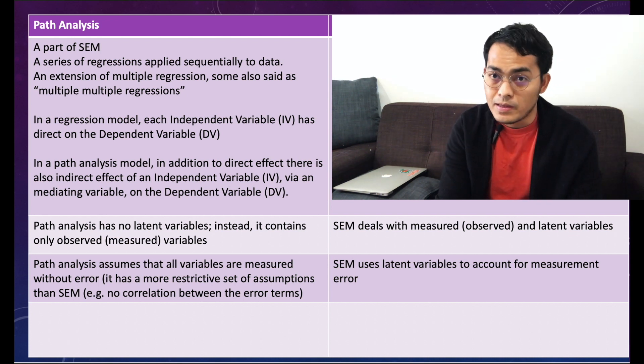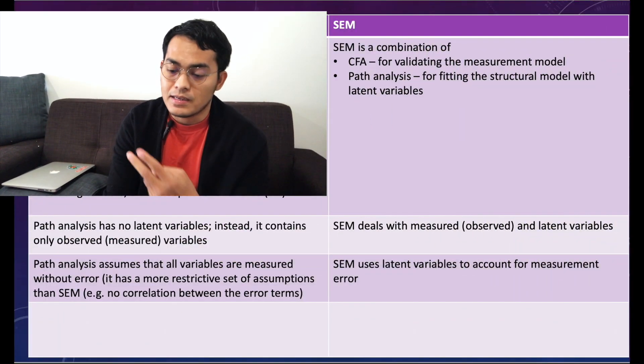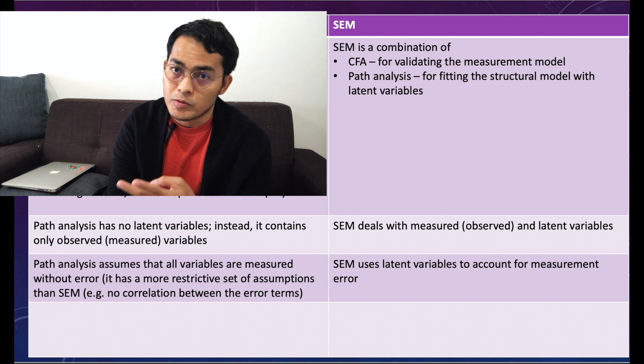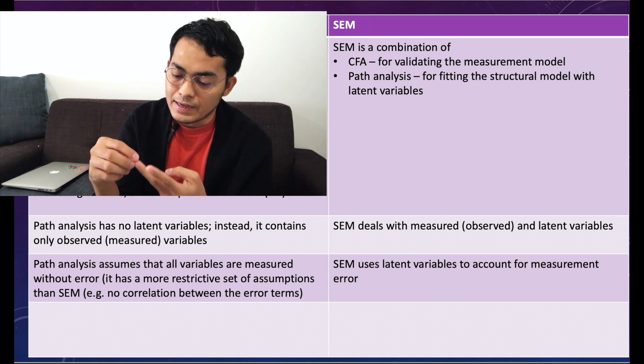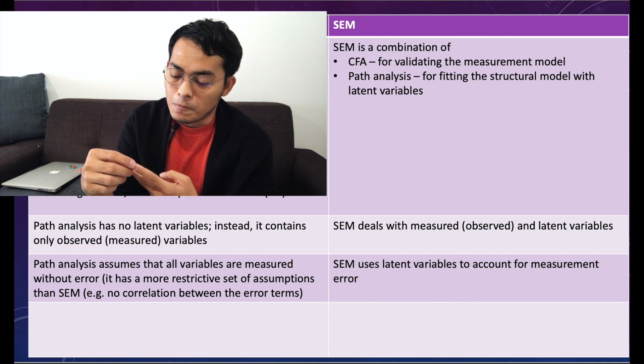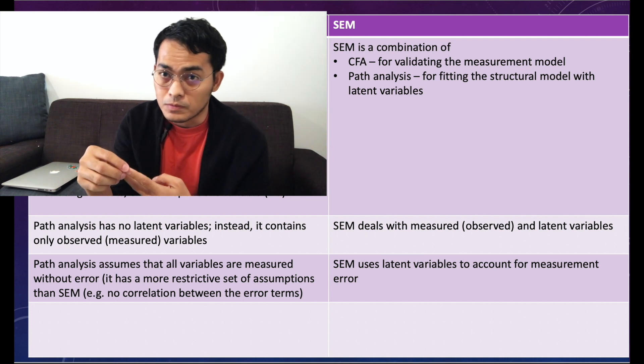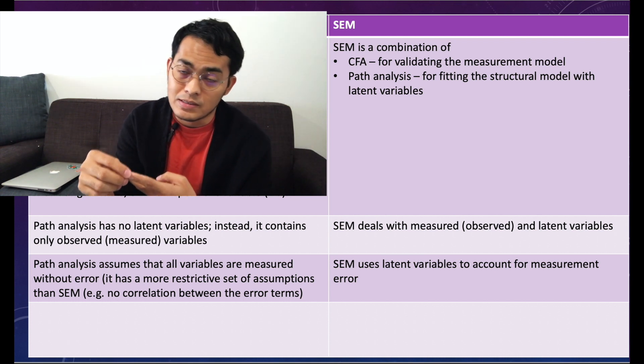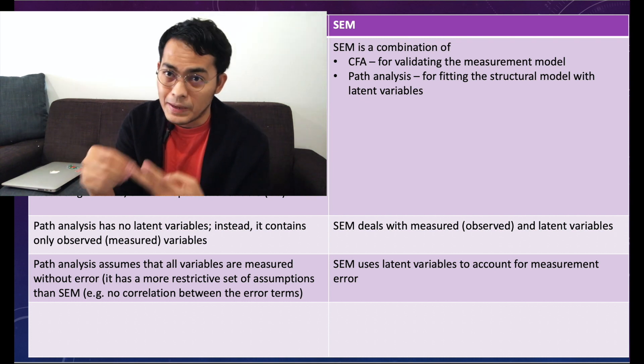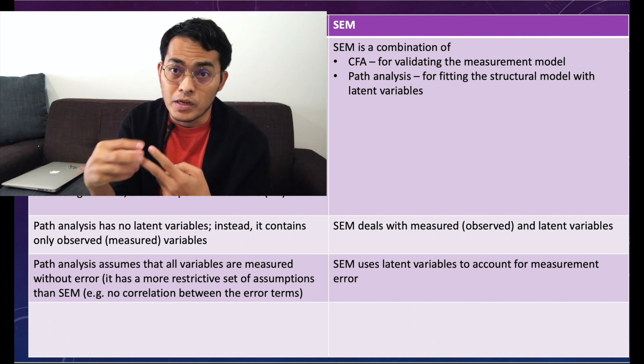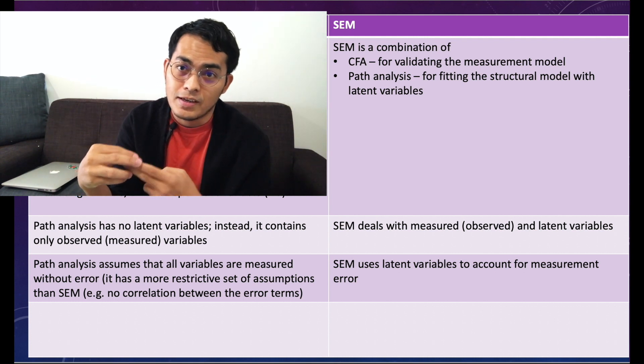What is the definition of SEM? Well, SEM is a combination between CFA (confirmatory factor analysis) and path analysis. It consists of measurement model and structural models. If you only use measurement model, we call it only CFA. But if you only use a path model, we call it path analysis. But if you use the combination of the two, we call it structural equation model.